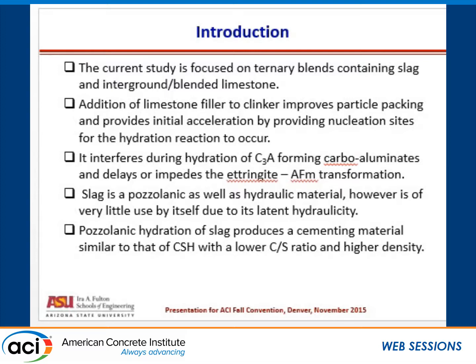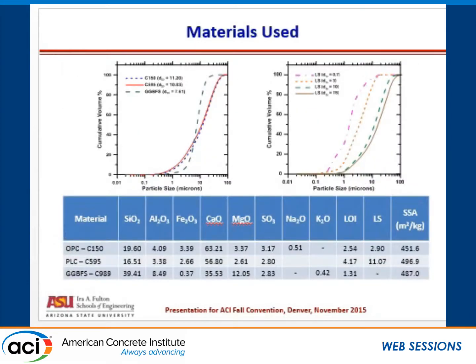Having a ternary blend with slag, limestone, and cement would be an interesting combination. Limestone gives you better early age properties, and slag, if added to cement, acts as a pozzolanic material and gives you good later-age strength. For the purpose of this research, we use ground granulated blast furnace slag. It has a D50 of 7.6 microns, much finer than C150.